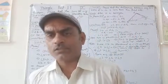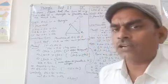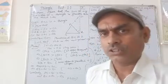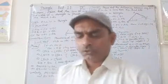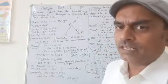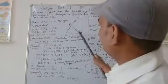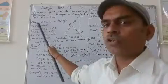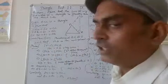The first theorem is: the sum of two sides of a triangle is greater than the third side. According to the statement, we will consider a triangle ABC, where ABC is a triangle.